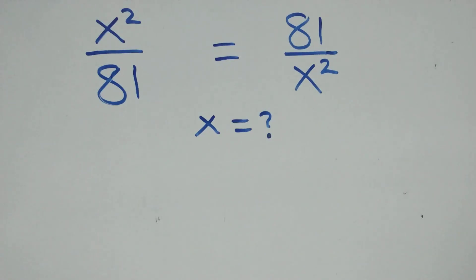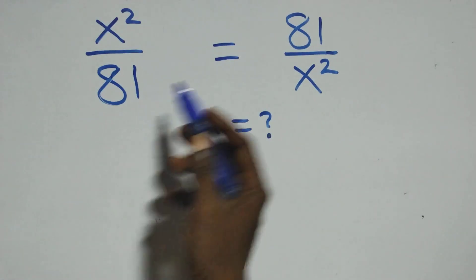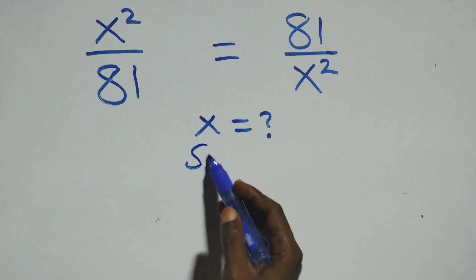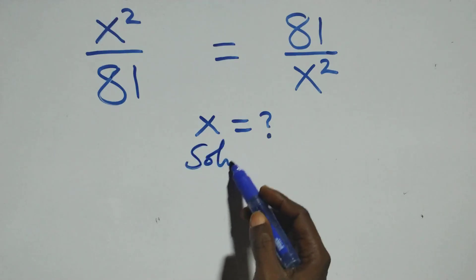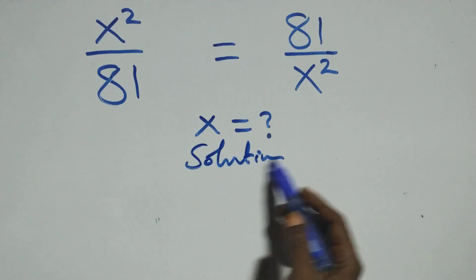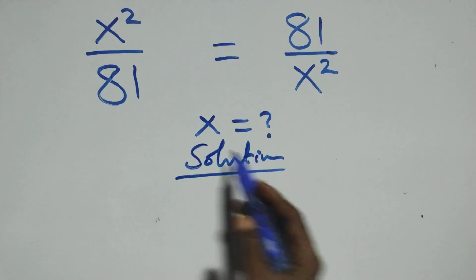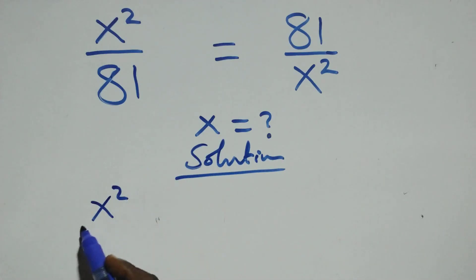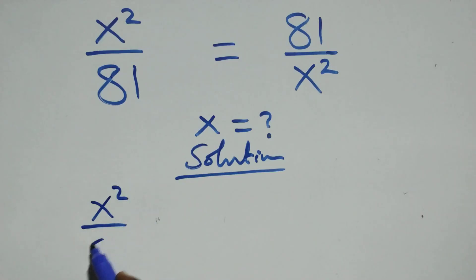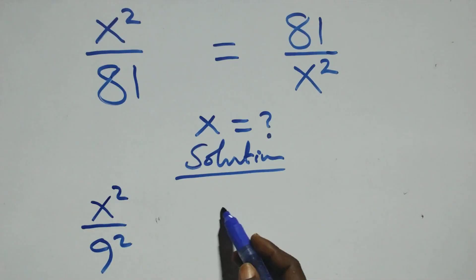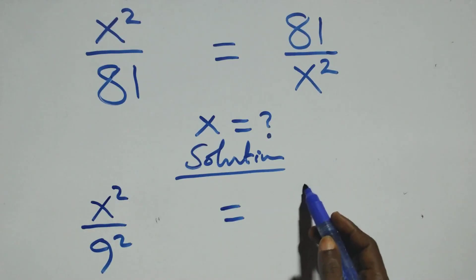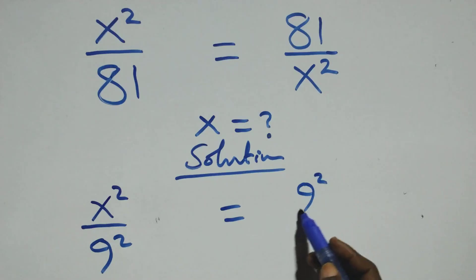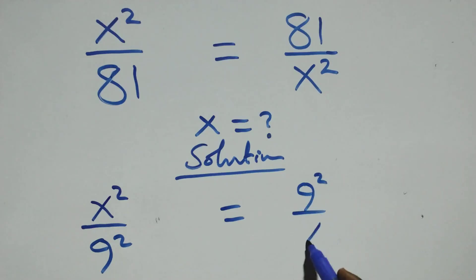Hello, you are welcome. How to solve this nice algebra equation. We can write this as x² over 81 — that's nine times nine, which is nine squared — equals nine squared over x².